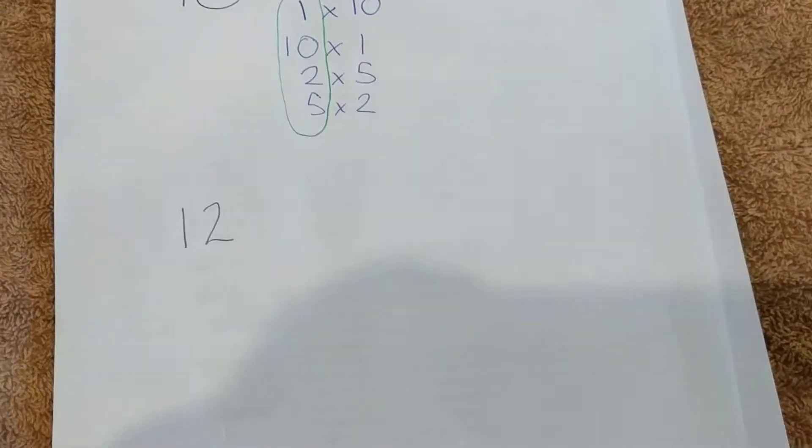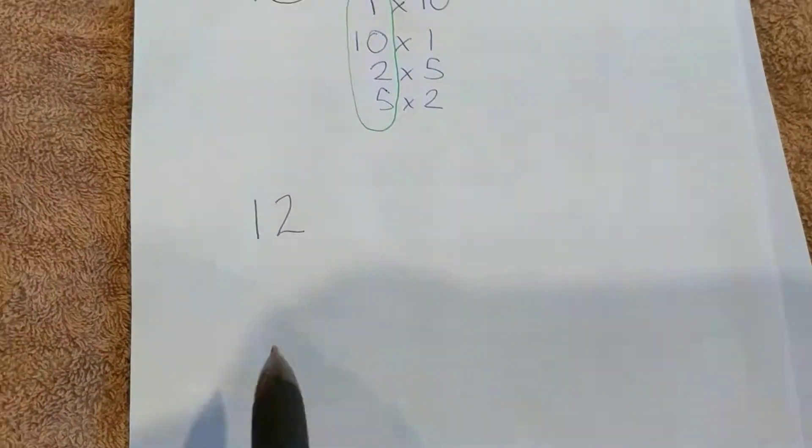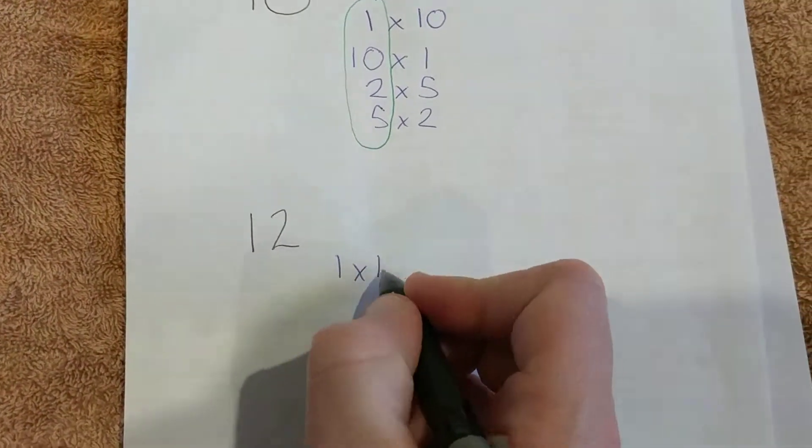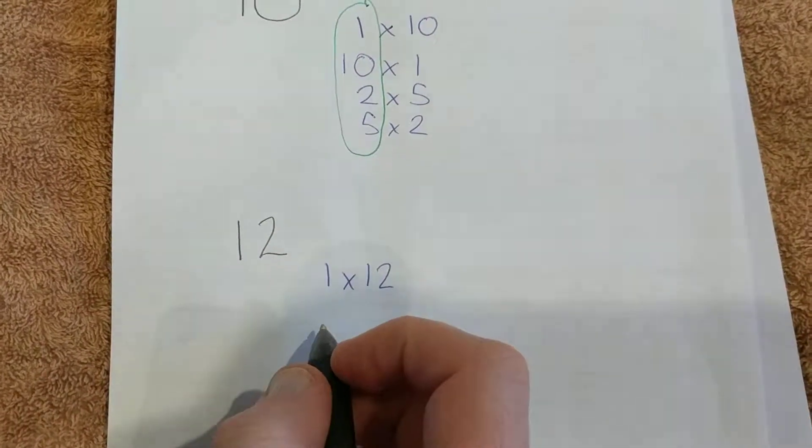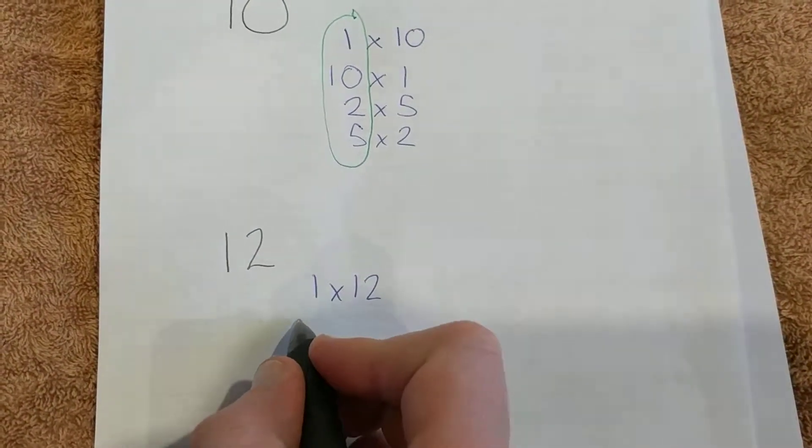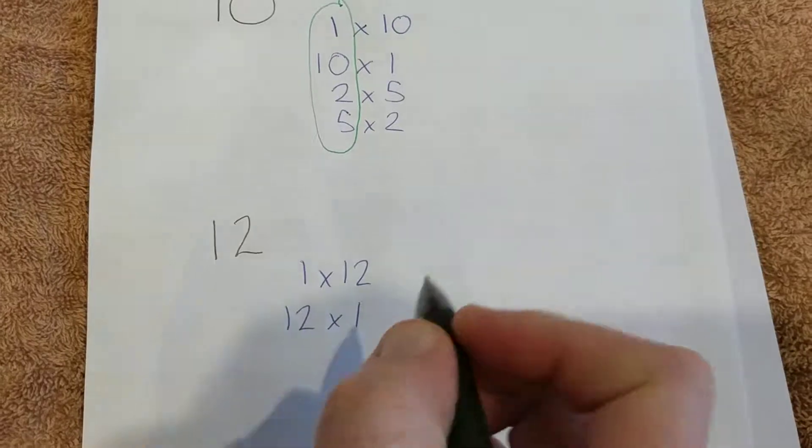So let's go down to 12 then. Straight away I know that 1 is a factor because 1 is a factor of all numbers that are 1 or above, and therefore we know 12 is a factor. 12 and 1.